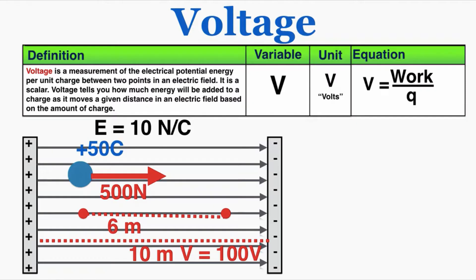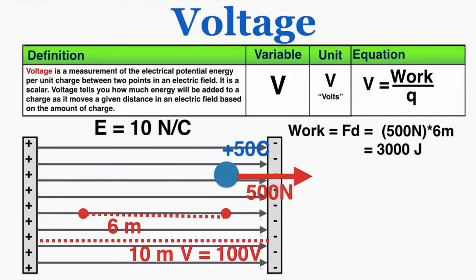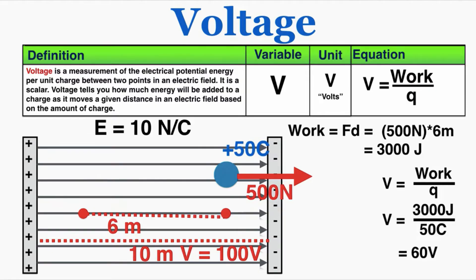If we measure a different distance — say a charge moving just 6 meters within the field — that will have a different voltage. Voltage is the change in electrical potential energy per unit charge between two selected points. Our original points were the two parallel plates, but now I've selected two points in the center of the field separated by 6 meters. The work done is 500 newtons times 6 meters, which equals 3,000 joules, giving a voltage of 60 volts across those 6 meters. The amount of voltage depends on the length you are moving through the field.